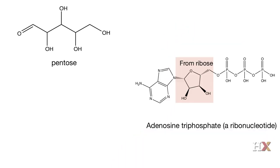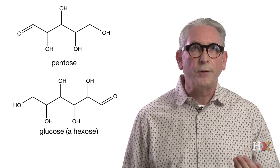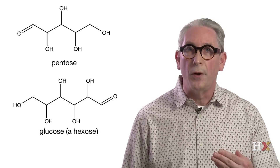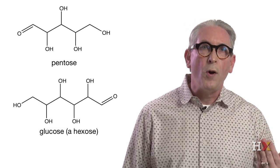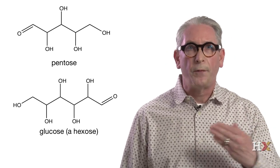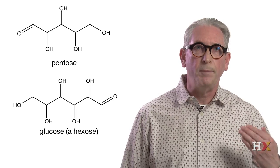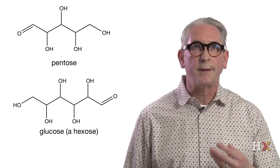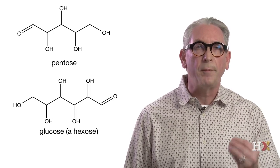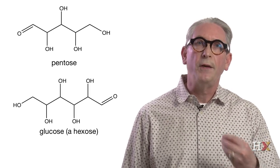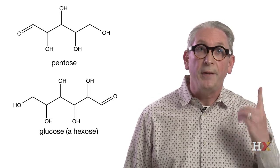For example, ATP — adenosine triphosphate — contains a molecule of ribose. Finally, hexoses are important fuel molecules, in particular glucose, and they are also found in homo- or heteropolymers. For example, glucose in plants is polymerized in the form of starch, while in animals glucose polymerizes in the form of glycogen — even in coach potatoes.